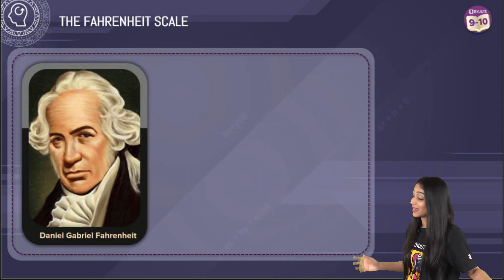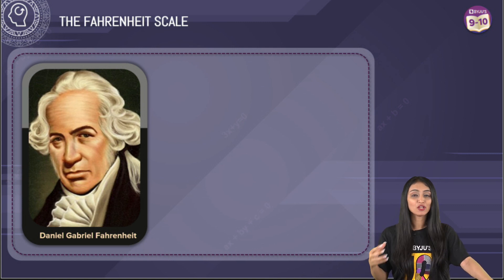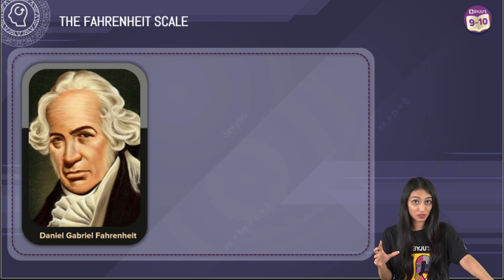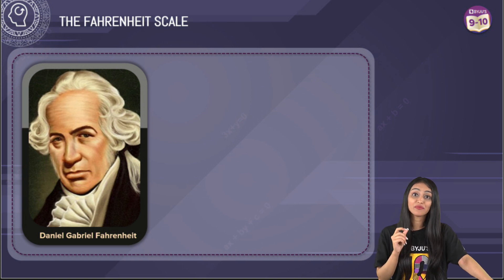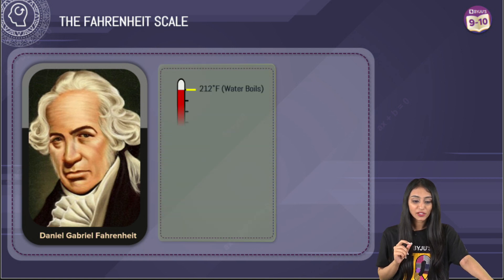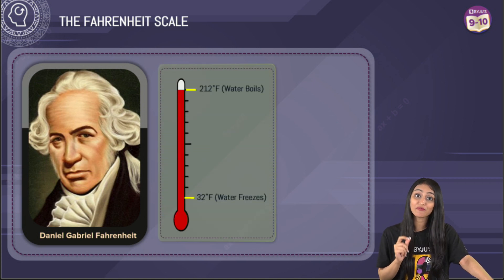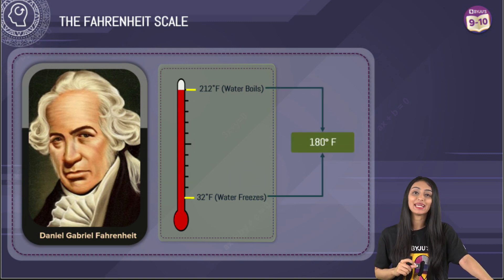This is Daniel Gabriel Fahrenheit, the person behind the invention of the Fahrenheit scale. With the invention of mercury thermometers, there was a need to make a scale to measure temperature. Fahrenheit understood that the scale needs to be universal and must show the same reading anywhere in the world. So he chose water — the most common thing available. He observed that water freezes at a certain temperature and boils at a certain temperature. He marked 32 for the freezing point and 212 for the boiling point, and both temperatures were separated by 180 degrees.